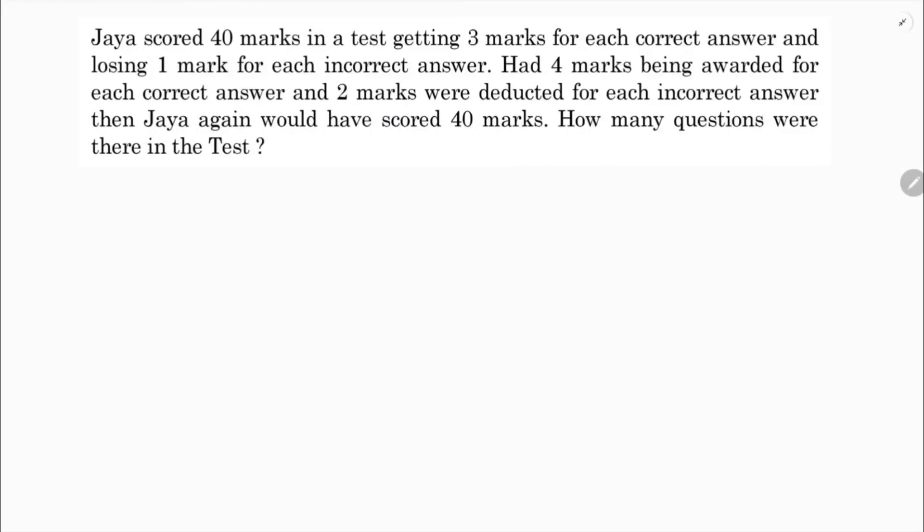Let the number of correct answers be x and number of incorrect answers be y. Because correct and incorrect if you add them, we will get the total number of questions. So total is nothing but x plus y. I will find x and y then just add them.